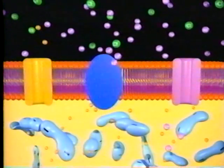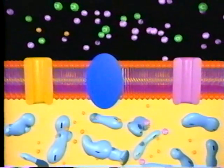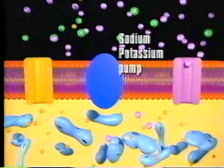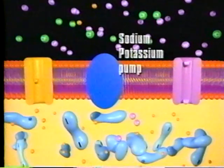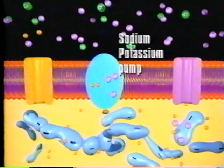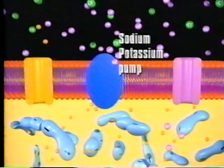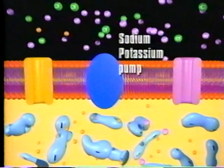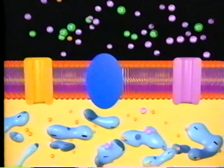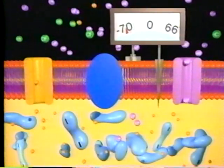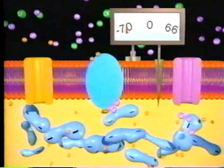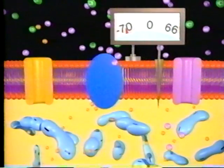In a resting cell, the transmembrane potential remains stable because the sodium-potassium pump uses active transport to remove the accumulating sodium ions. During this process, potassium ions are reclaimed from the extracellular fluid. The ion distribution across the membrane maintains a resting membrane potential of minus 70 millivolts.